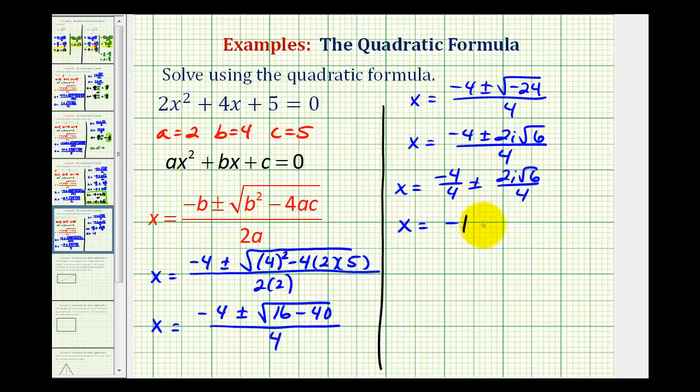This would be negative 1 plus or minus, the 2 and the 4 simplify, so we have i√6 all over 2.